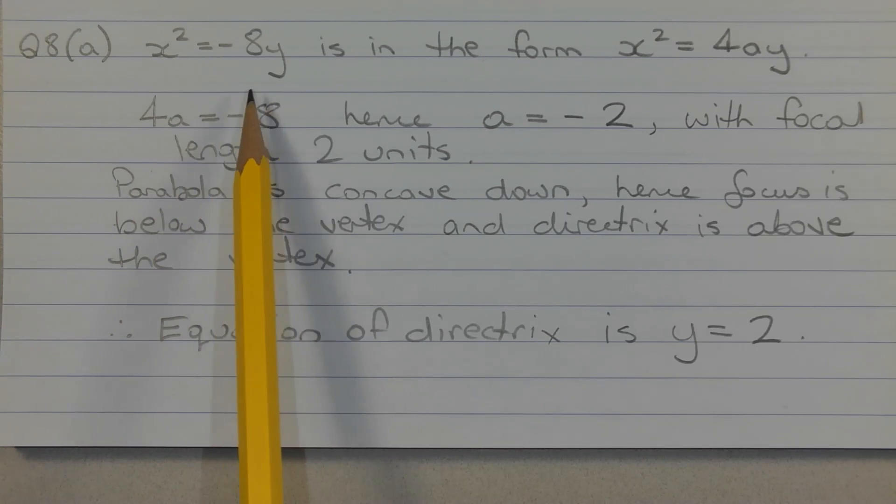we have 4a is equal to negative 8. Solving this equation for a by dividing both sides of the equation by 4, we get a is equal to negative 2.